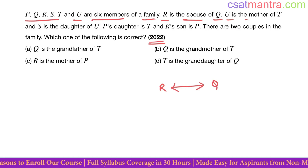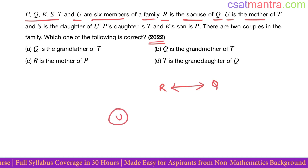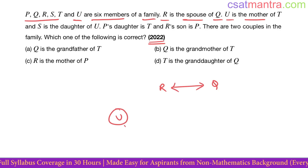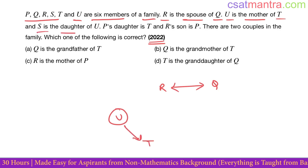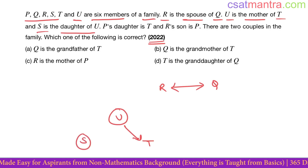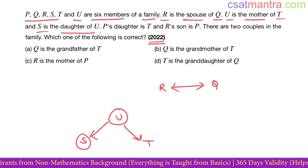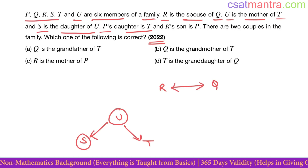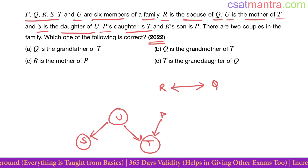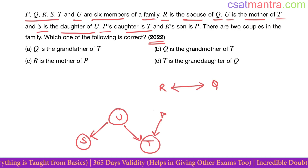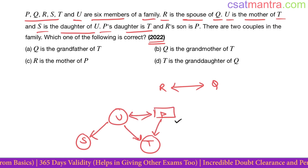U is the mother of T — so U is female, and T's gender we do not know. S is the daughter of U — daughter means female. P's daughter is T, so T is female. Since U is already the mother, P should be the father, meaning P is male.